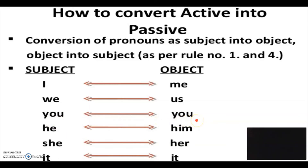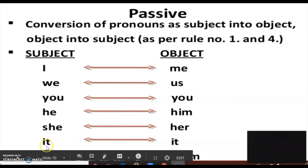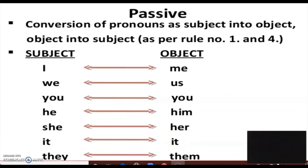Now, 'he' becomes 'him' in passive voice. Similarly, 'she' is the subject pronoun and changes to 'her' in passive voice, so 'her' is the object pronoun. For 'it,' it does not change its form — it remains 'it' even in passive voice, where it serves as the object pronoun.